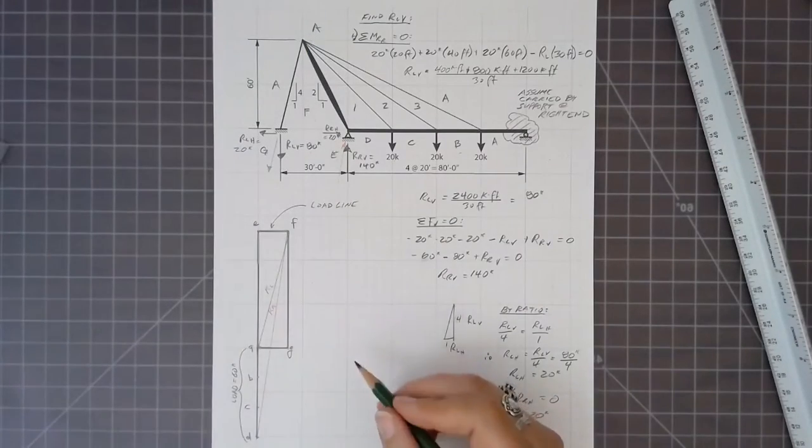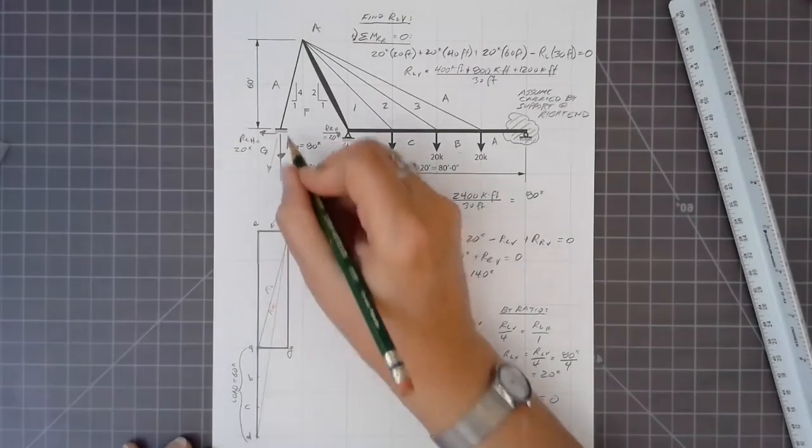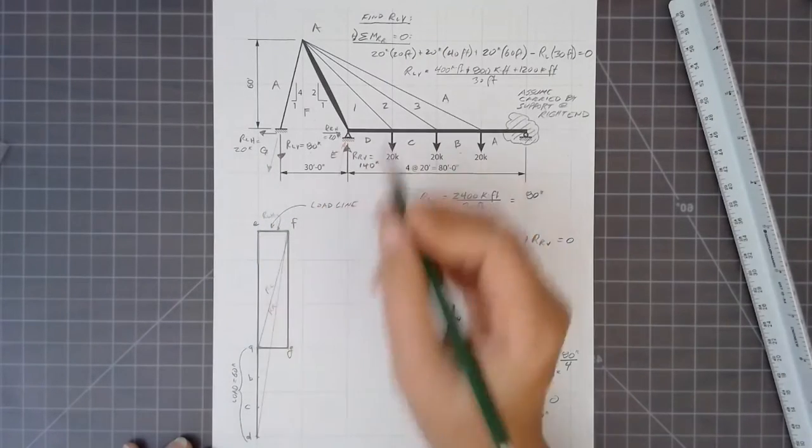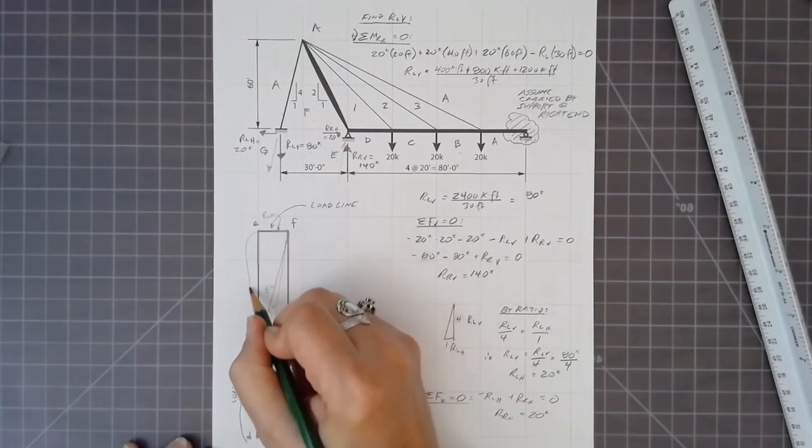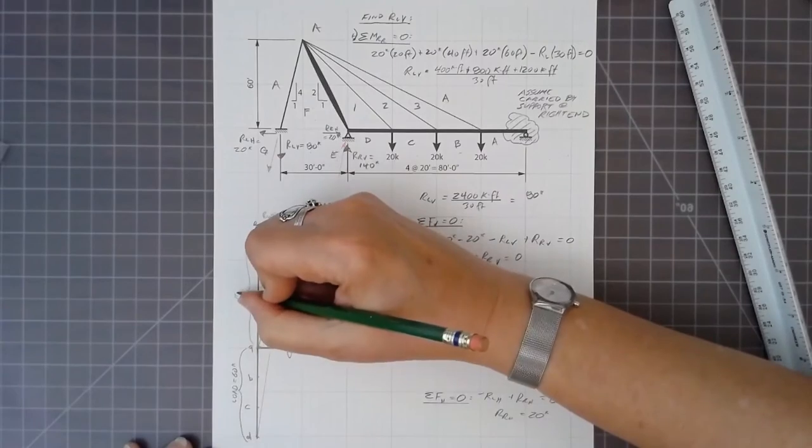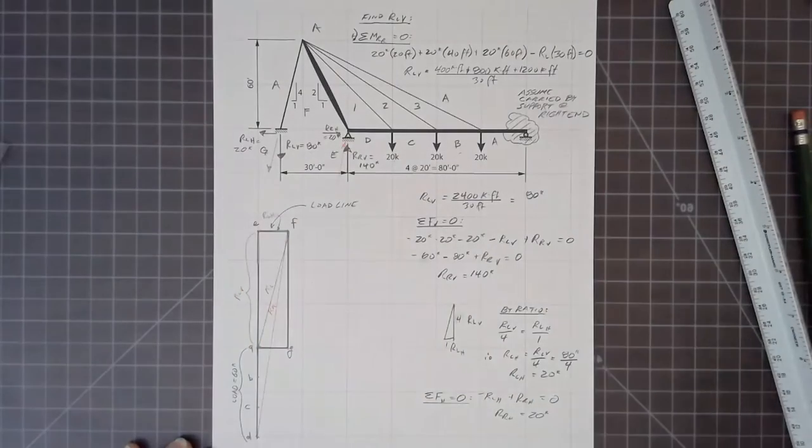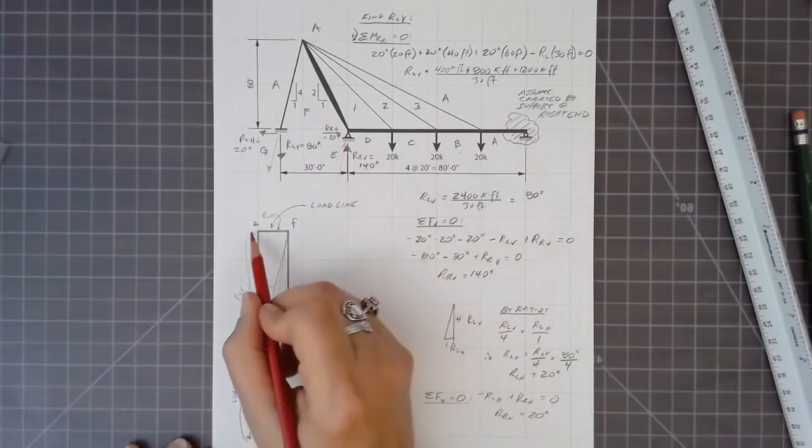And we can see there's embedded in the diagram the horizontal and vertical components of both the left-hand reaction and the right-hand reaction. So overall, this whole long tail here, that's the vertical component of the right-hand reaction.